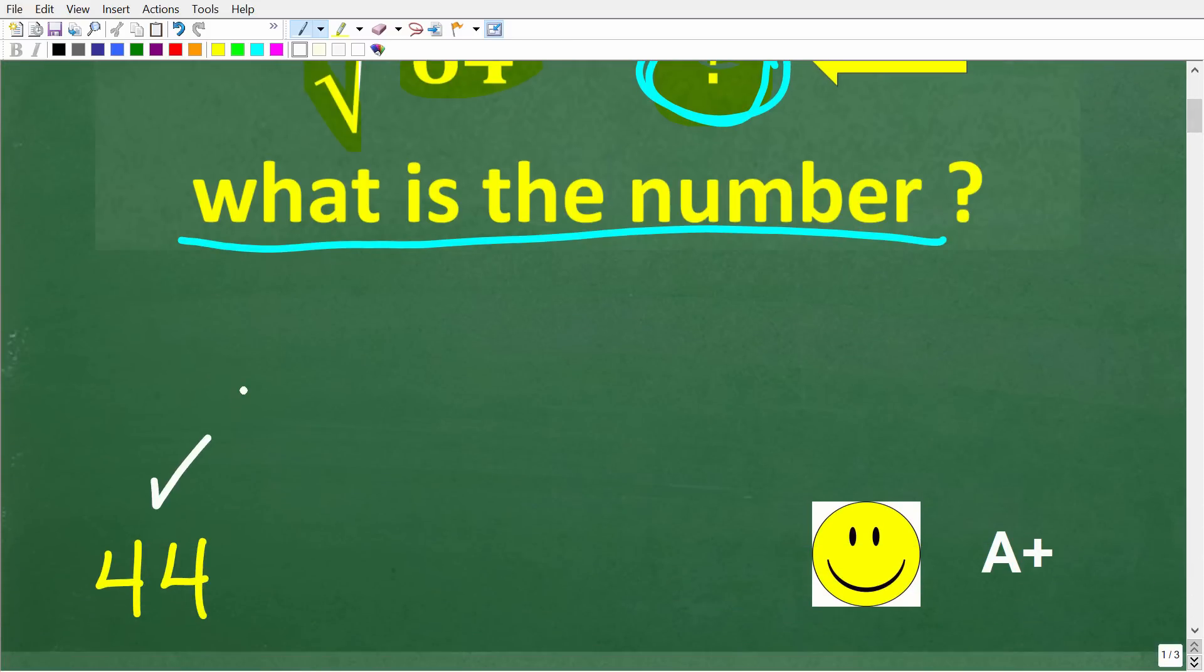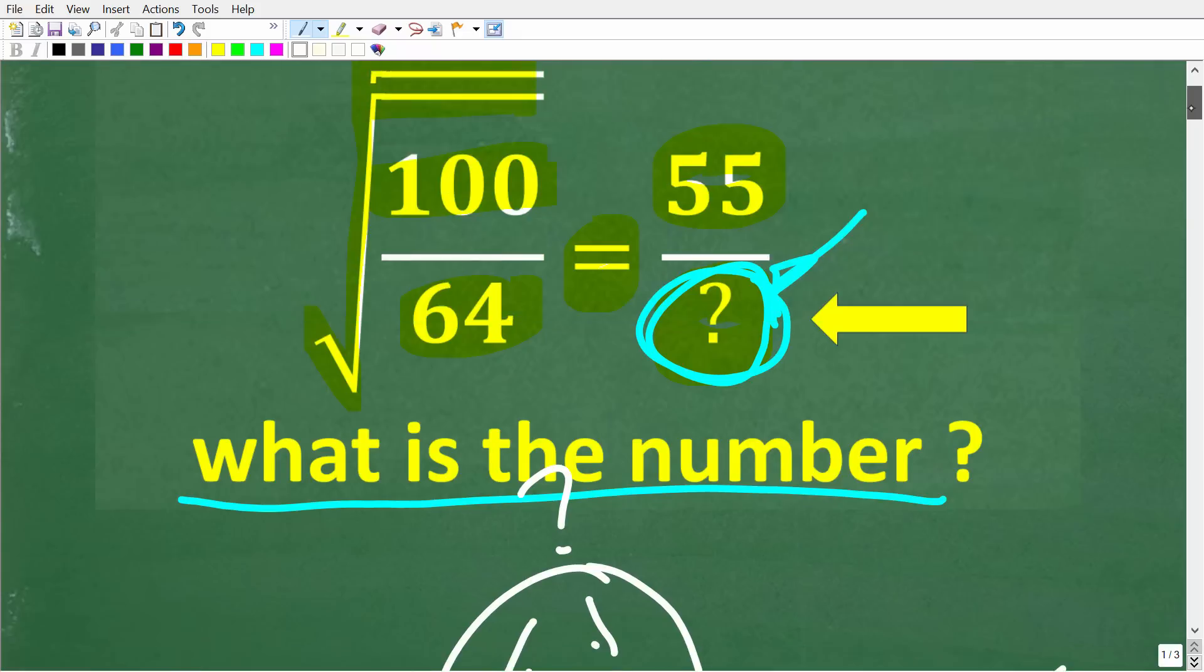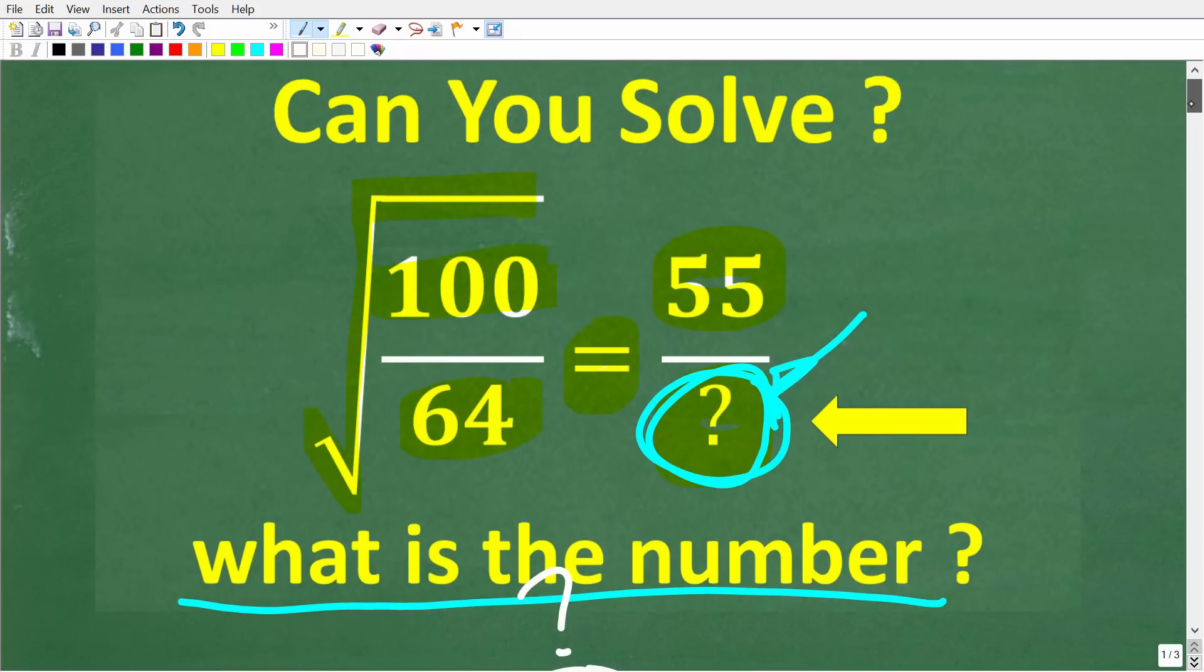Now, if you got this right, well, you definitely get a happy face and A+. If you're like, I miss you to math, man, I don't know how to find the mystery number. Well, actually, this is not that difficult, and there's not just one way to solve this problem. So let's see exactly how to figure out this math question.